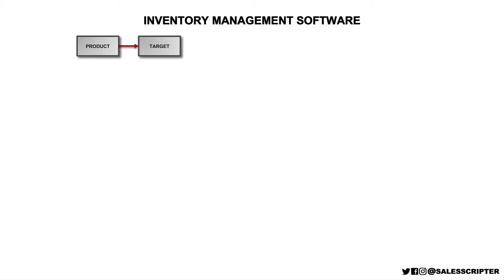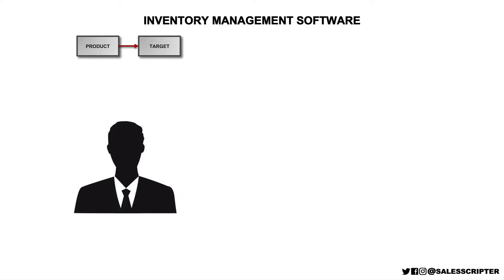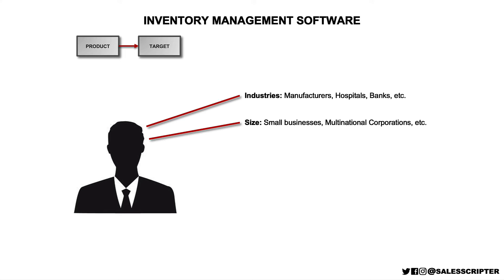The next step in the process is to stop and think about who are we going after? Who are we trying to meet with? Who are we going to be communicating with with this sales message? If we think about some of the different people that we can talk to, you might want to think about going after different industries. Maybe we can sell our software to different verticals: manufacturers, hospitals, banks, government institutions. You might want to think about the different sizes of organizations — small businesses or large global organizations. The size of the organization could impact your strategy and could impact what you say and ask.